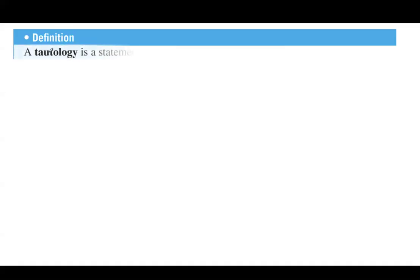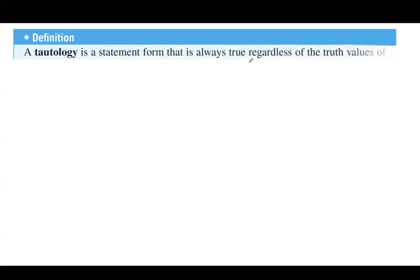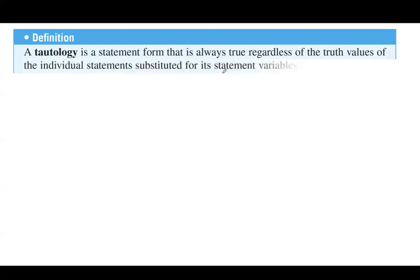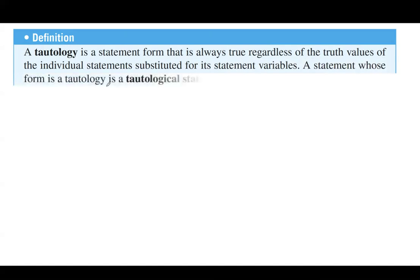What is a tautology? A tautology is a statement that is always true regardless of the truth values of the individual statements substituted for its statement variables. A statement whose form is a tautology is called a tautological statement.